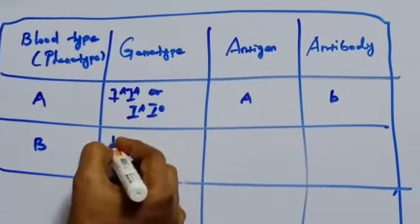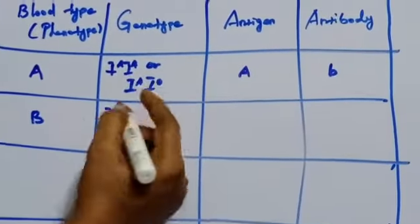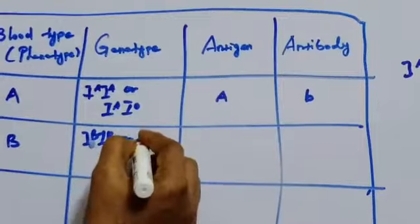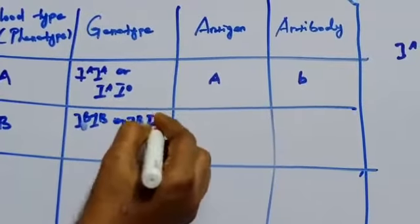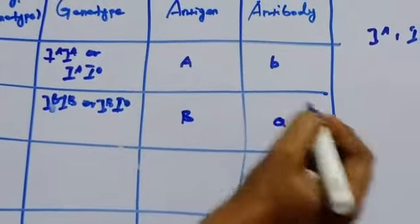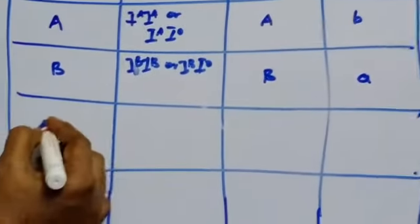Next, blood group B. The genotype is IB IB or IB IO. And the antigen present is B and antibody A.